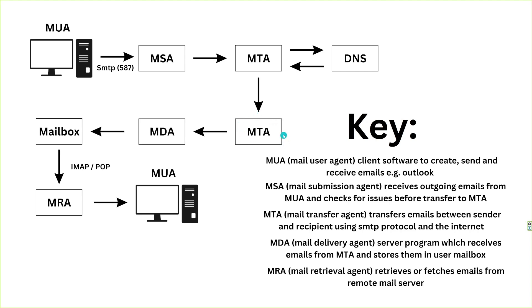The receiving MTA accepts the email, checks whether it's spam and if the domain is valid, then passes it to the MDA. The MDA simply saves incoming emails into the mailbox — for example, if 'hopsy' is a user, it saves it into that folder; if the MTA flagged it as spam, the MDA puts it into the spam folder. The receiving MUA can't yet see the email — that's where the MRA comes in. The mail retrieval agent periodically polls the mailbox, and you can force a poll by hitting send and receive. Once it finds an email, it pushes it to the end client.